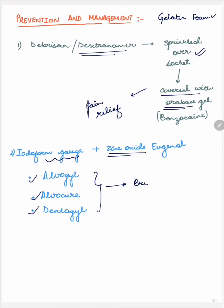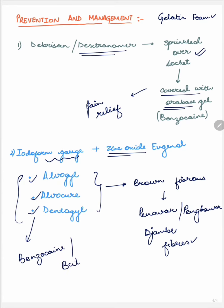All these are having brown fibrous consistency due to a special ingredient present in them, that is Penghawar or Penghawar Djambi fibers, which are derived from Rhizopus. Also, these all medicaments are having some local anesthetic such as benzocaine or butamben. So this was all about dry socket. Thank you.